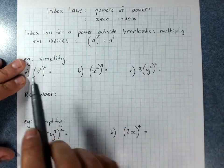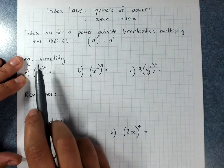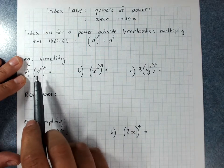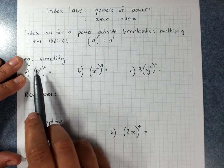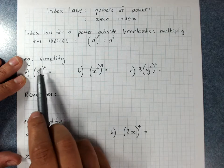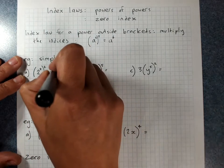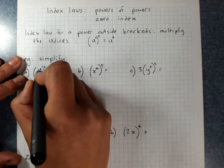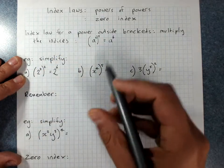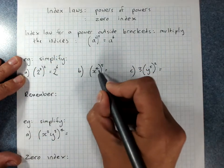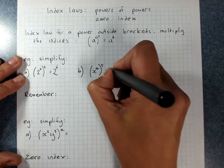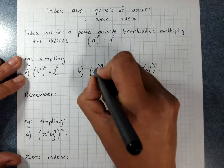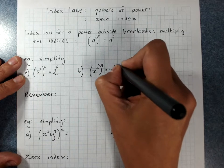So if we're asked to simplify: in the brackets, 2 to the power 3, squared — power outside brackets — I've got 2 to the power 6, that's 3 times 2. Then x to the power 4, brackets to the power 5, gives x to the power 4 times 5, which is 20.